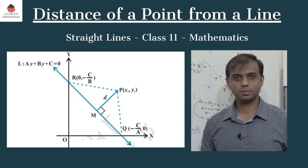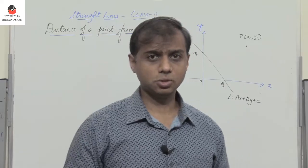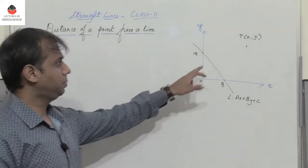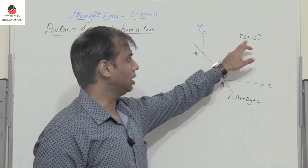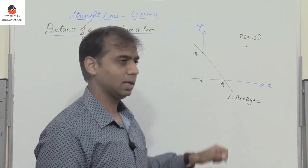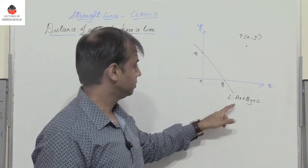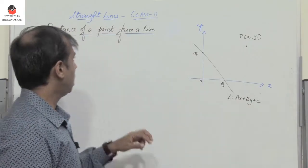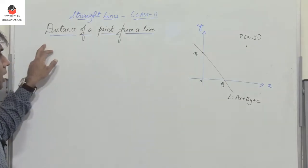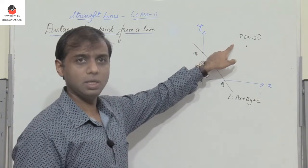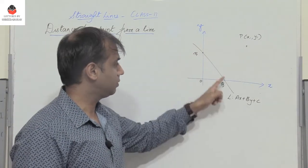Let us derive a very important formula from the chapter Straight Lines. Consider a point P with coordinates (x1, y1) and a straight line L: Ax + By + C = 0. We want to find the distance of the point P from the given line.